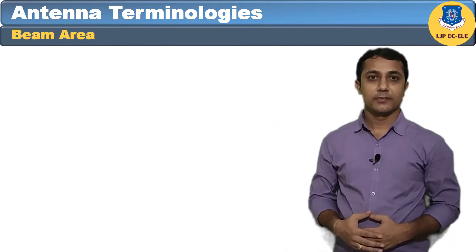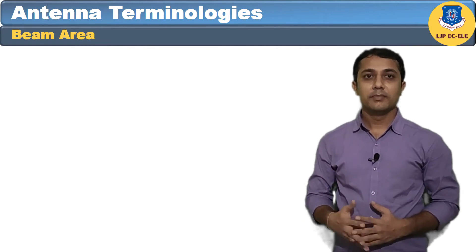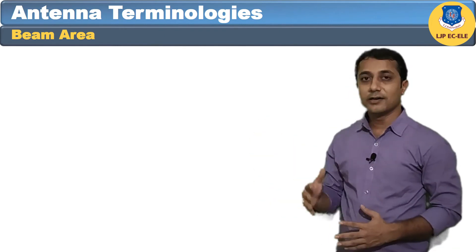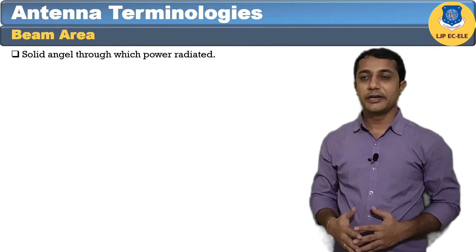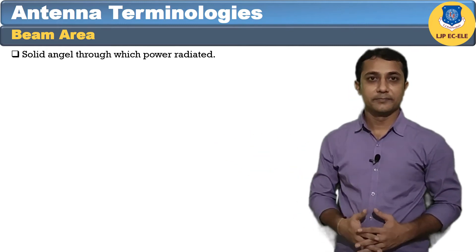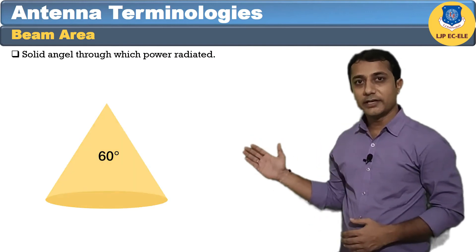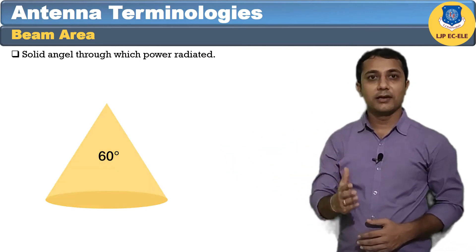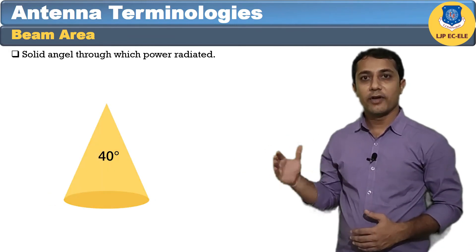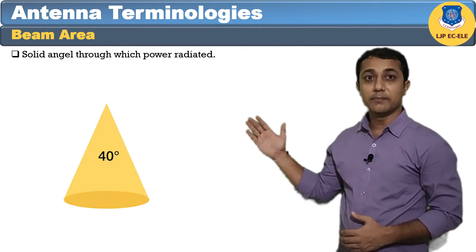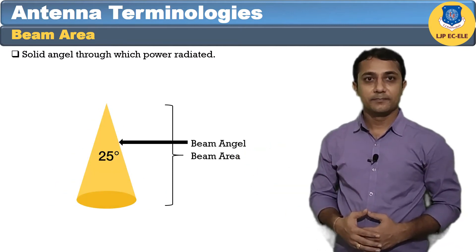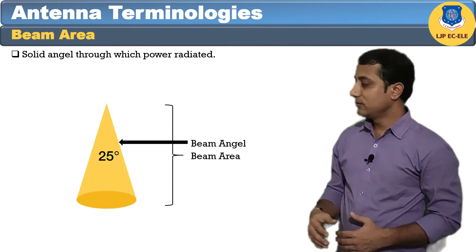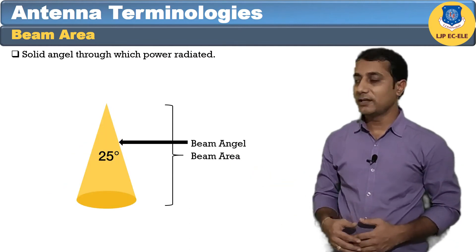Now, beam area. The beam area refers to the main beam of the antenna radiation pattern. According to the standard definition, the beam area is the solid angle through which all the power is radiated by the antenna. The radiation beam comes out from an angle at the antenna — known as the solid angle — where the radiated power intensity is maximum. This solid angle is termed the beam area, as shown in the illustration.